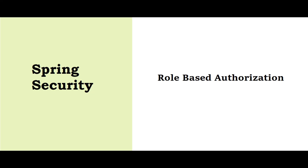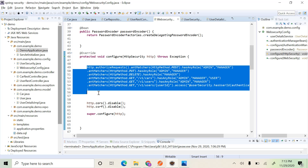Welcome to Java Coding Assist. This is part 2 of the topic role-based access control. If you are watching this video directly, please watch part 1 first. We have discussed a lot about role-based access control and how to configure that in WebSecurityConfigurerAdapter. Now let's see how to configure that in controllers or in service classes.